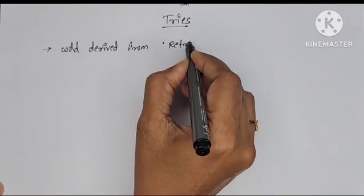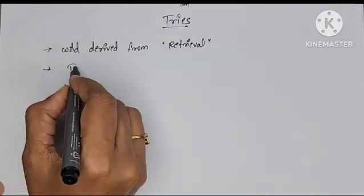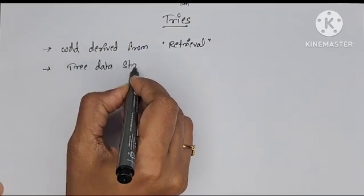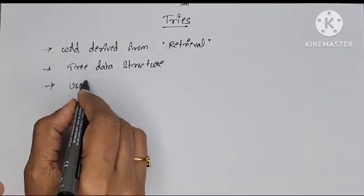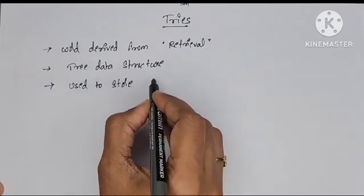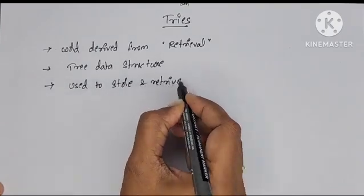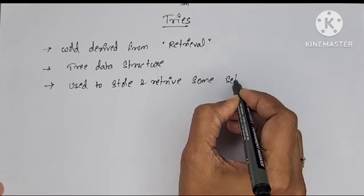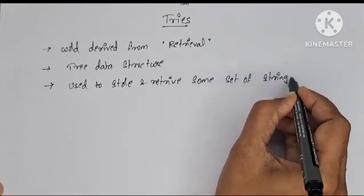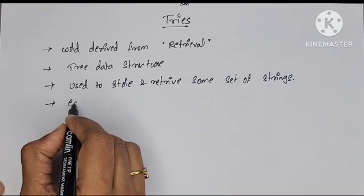We can store and retrieve strings and it is a tree data structure. Tree means a set of nodes and edges. Every node can store one letter. Whenever we want to store strings in a data structure, this is the best method to store and retrieve strings.